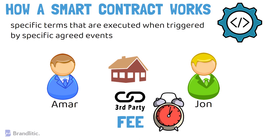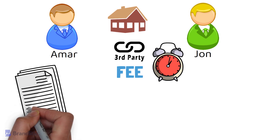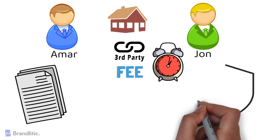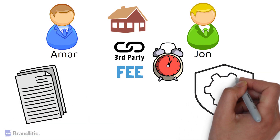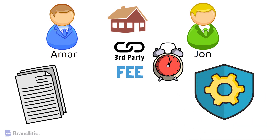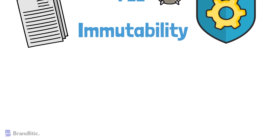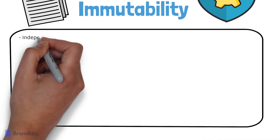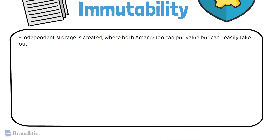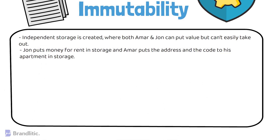If Amar and John instead make an agreement using a smart contract, the smart contract will behave logically based on its algorithm and will guarantee that all the agreed terms and conditions are fulfilled — immutability is in the DNA of a smart contract and won't let Amar or John cheat. The following terms can be set out: first, independent storage is created where both Amar and John can put value but cannot easily take it out. Next, John puts the money for rent in the storage and Amar puts the address and the code to his apartment in the storage.